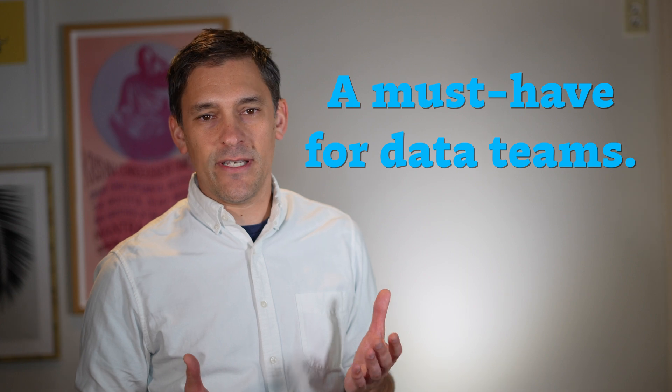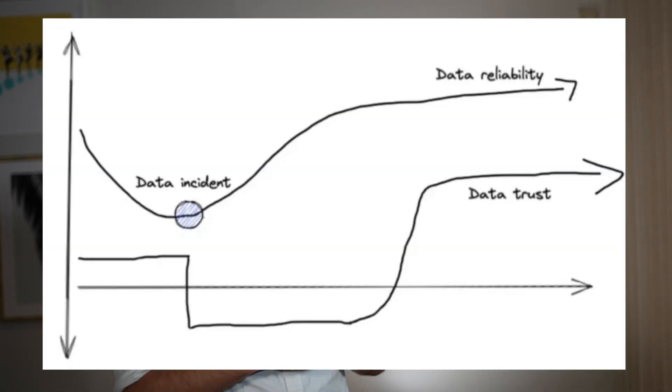Thirdly, I think you'll just see data observability become a must-have for data teams as they start to extend into more machine learning use cases, critical applications for the business that are driving revenue and not simply being used to support decision-making. And so without observability, you're unable to sort of build in that reliability by design and trust into the data system.